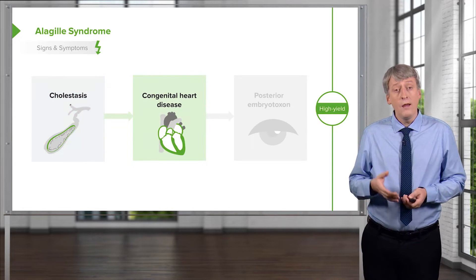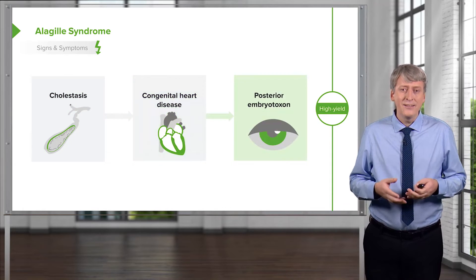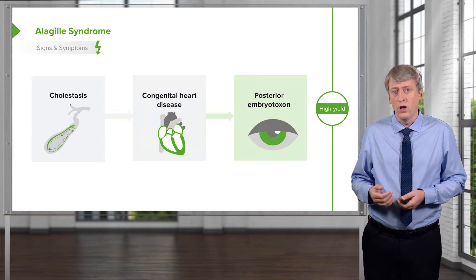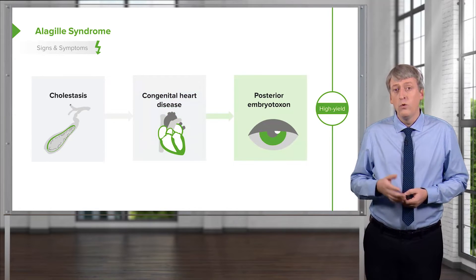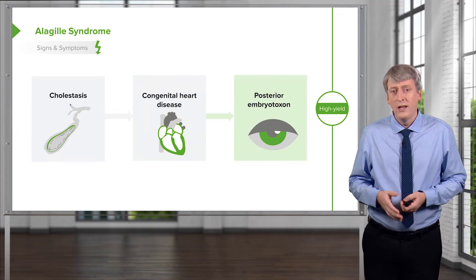A murmur is often appreciated. And lastly, these children can develop posterior embryotoxon in the eye, which may cause problems down the road and is something that you have to watch out for.